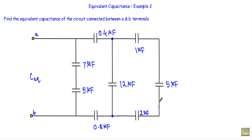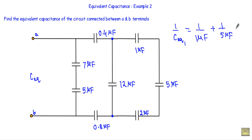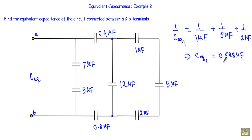I will call that equivalent capacitor C_equivalent1. Calculating: 1/C_equivalent1 = 1/1 µF + 1/5 µF + 1/2 µF. Therefore C_equivalent1 = 0.588 µF. I will replace those three series capacitors with a single capacitance of 0.588 µF.